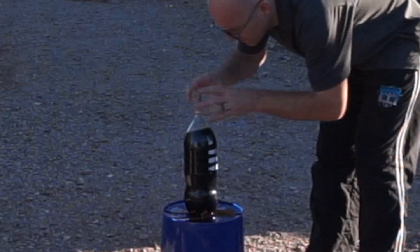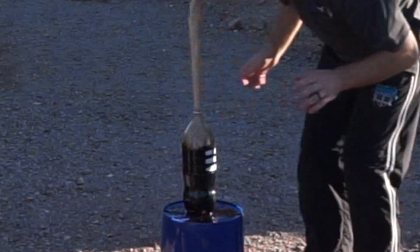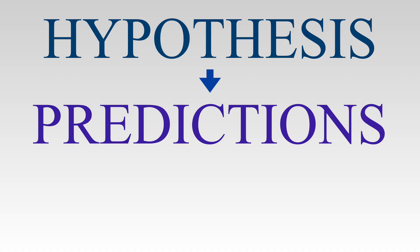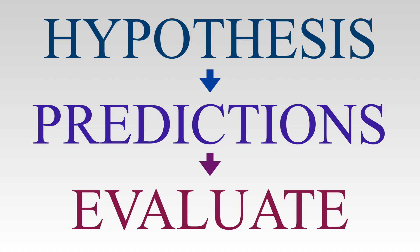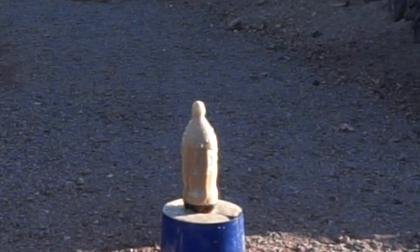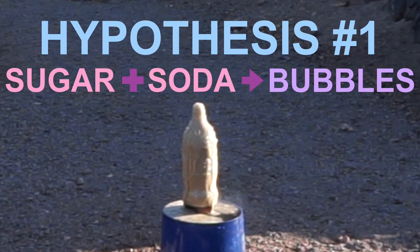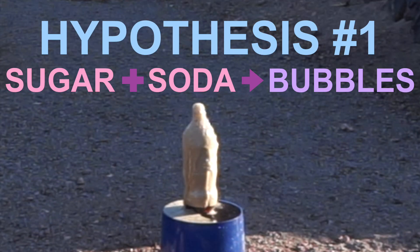There is a reason Mentos react with soda to produce a fountain of bubbles, and with the help of the scientific method, we can figure out which explanation is correct. Let's begin by testing the first explanation we heard: that the reaction is caused by a chemical reaction of sugar in diet soda.